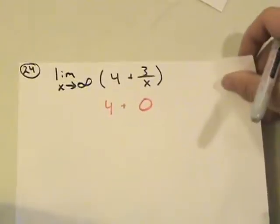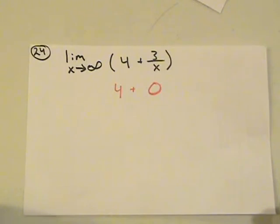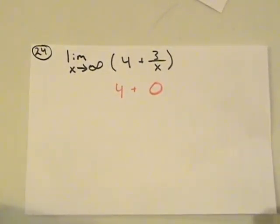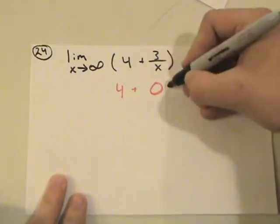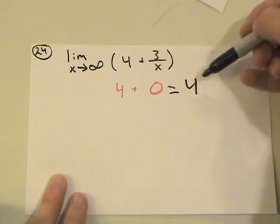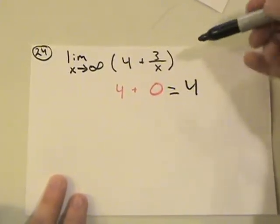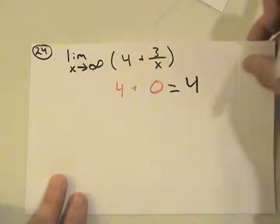Number 24 is pretty straightforward. The limit says x approaches infinity of four plus three over x. Since three over x is just a constant over x to some exponent — in this case x to the first — it's just going to go to zero. So it's four plus zero, meaning the limit is four. This would be a horizontal asymptote because the degree of the numerator was not one larger than the degree of the denominator.